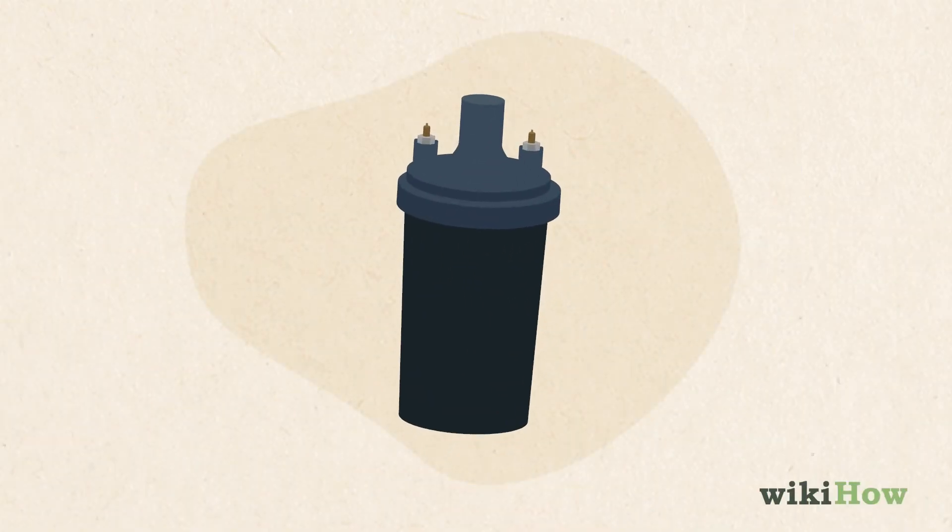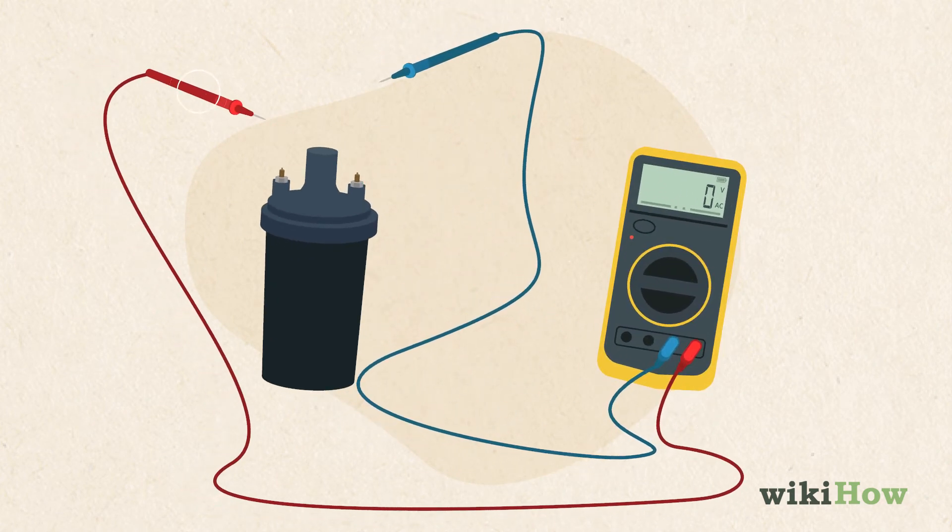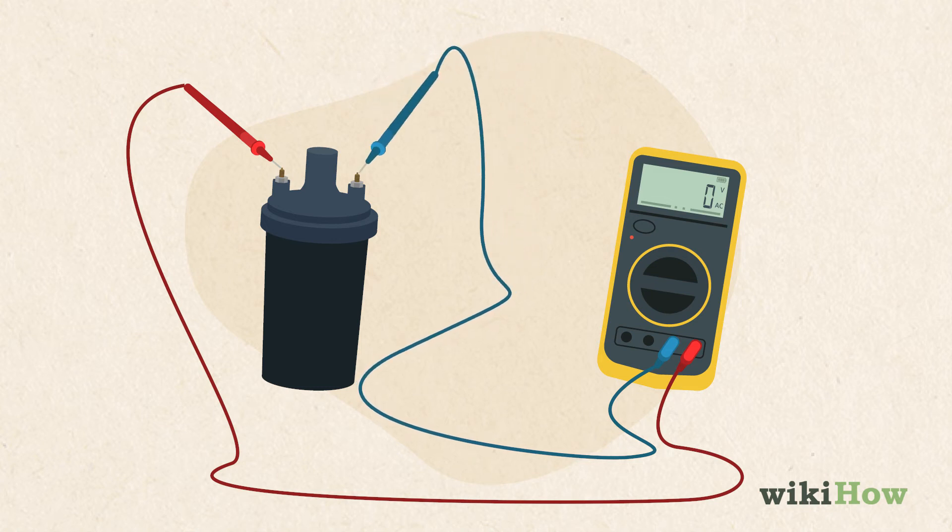To test the primary resistance on the coil, grab a multimeter and attach the positive probe to the positive terminal on the coil. Then attach the negative probe to the negative terminal.